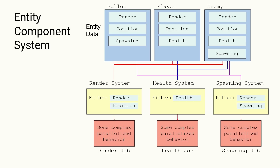The System has a very crucial part to it, which is this filter. For the Render System, the filter is Render and Position. So basically my Render System is going to say: find me every Entity that has a Render Data component and a Position Data component. Then all Entities are returned back to it and it performs some functionality on them. The Render System doesn't care if it's rendering a Bullet, a Player, or an Enemy — it doesn't matter. It just processes all of these the same based on whatever data we provide to those Entities.